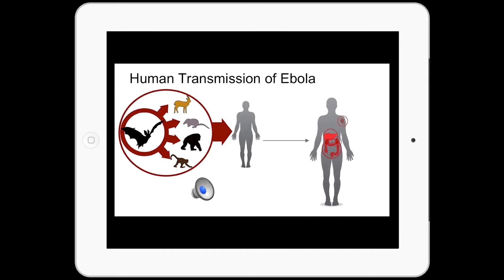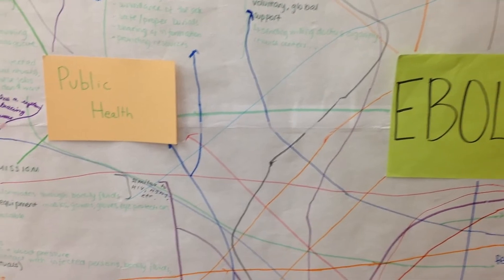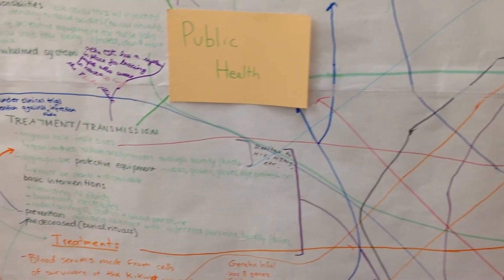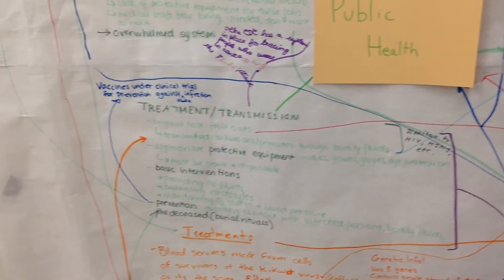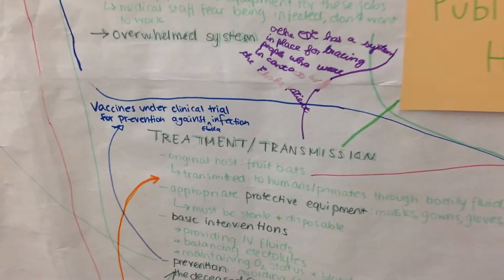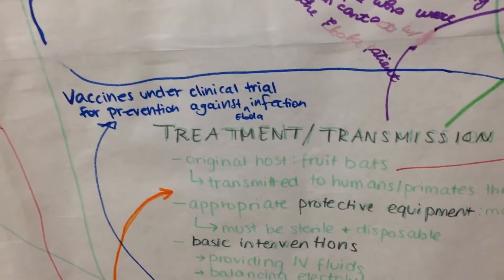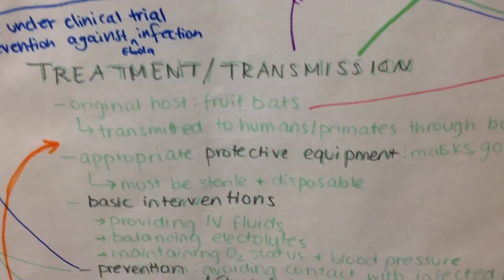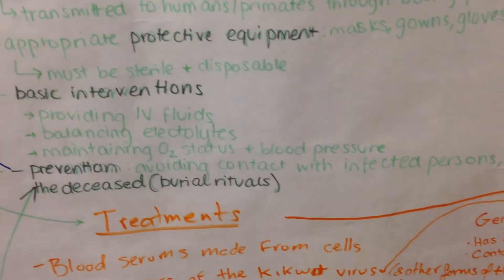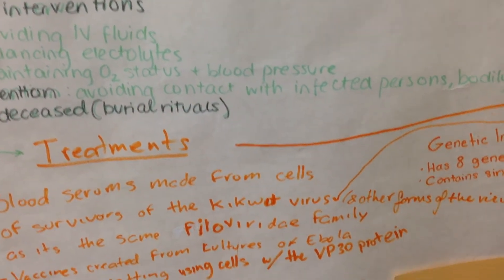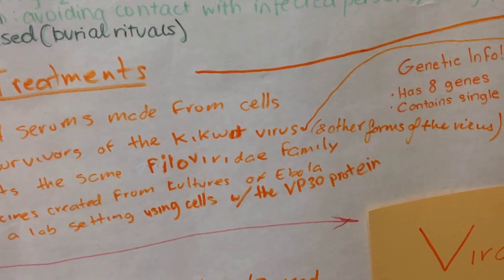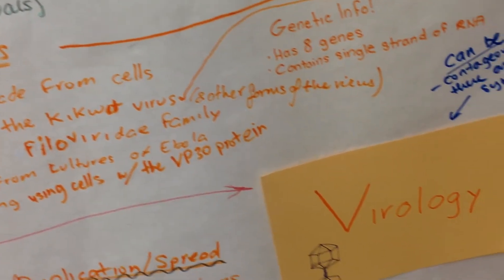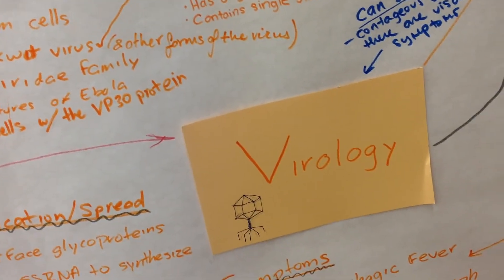The virus affects humans as well as other primates such as chimpanzees, gorillas, and monkeys. When an infection of the virus does occur in the human body, it can be spread and transmitted to other humans through direct contact of broken skin or mucous membranes with blood or other body fluids, or through objects contaminated with the virus such as needles and syringes. Although Ebola cannot be spread by air, water, or food, in Africa it is possible that Ebola may have spread as a result of handling bushmeat and infected bats.